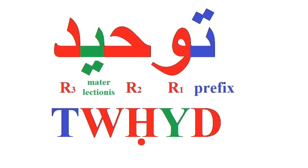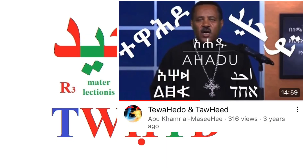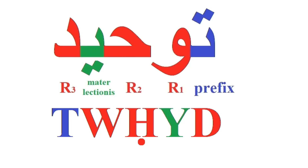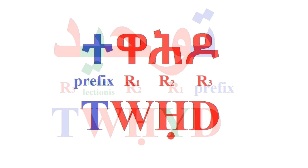Somewhat separate from Orthodox Muslim usages or limitations upon the word Tauheed, that word can also mean unification — and in secular settings it's used that way. And that provides us with an opportunity to transition to a similarly structured verbal noun in another Semitic language — Ge'ez. The Ge'ez equivalent of the Arabic word Tauheed is Tewahedo, which likewise can mean unification.